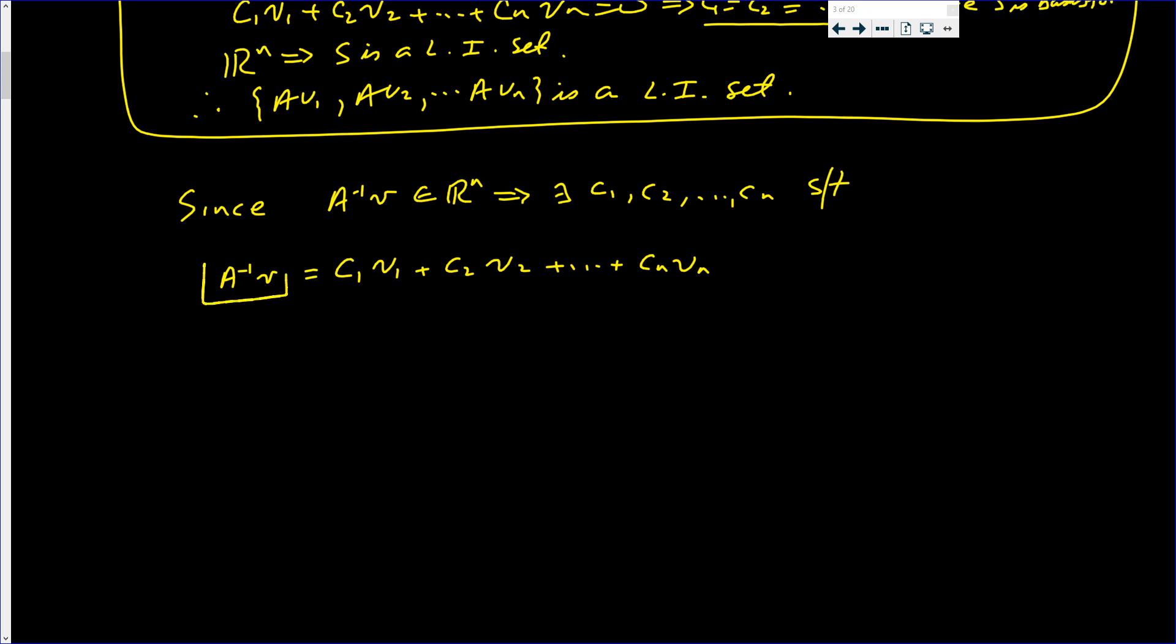Now, here's where the nice part comes in. Again, when things are really nice, you write them down twice. What I'm gonna do is, on the left side, on both sides, that's A inverse V. On the left side, I'm gonna multiply by A.